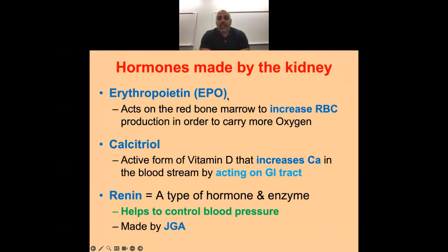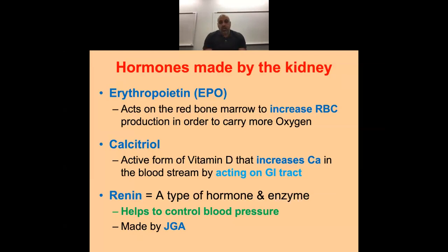EPO — erythropoietin. The kidneys are very susceptible to injury from lack of oxygen. If the kidney sees low oxygen levels, it releases EPO. EPO acts on the red bone marrow to increase red blood cell production. People with kidney failure need EPO injections to produce red blood cells; without it, they'll become anemic.